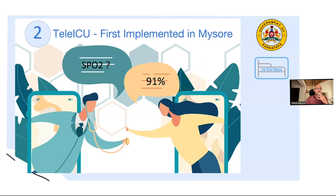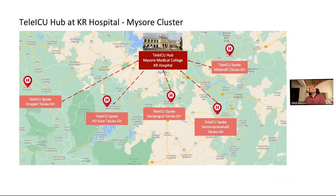In spite of delivering an actual ICU in a government hospital and creating the Care platform, we still had a problem. There weren't enough specialists to handle the patients — not enough intensivists, pulmonologists, and so on. Technology again came to help. We created the idea of a tele-ICU hub in a medical college, such as Mysore Medical College at KR Hospital.